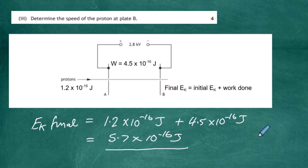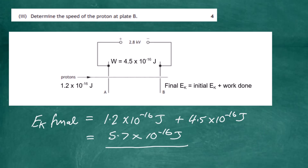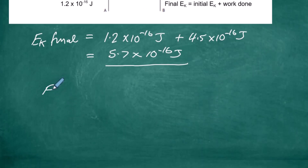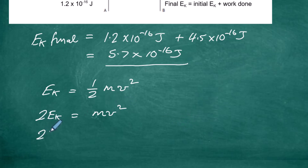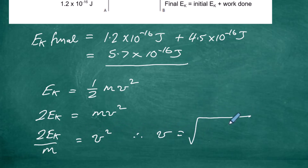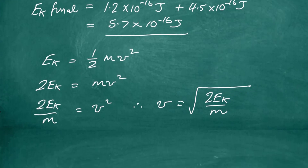We're asked to find the speed of the proton at plate B, so we rearrange the kinetic energy formula. We know Ek = ½mv², so we multiply both sides by 2 to eliminate the half, giving 2Ek = mv². We then divide both sides by m, leaving v² = 2Ek/m. Therefore v = √(2Ek/m), the square root of double the kinetic energy divided by the mass of the particle.